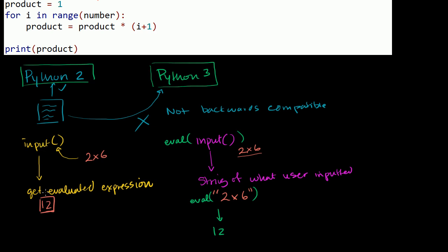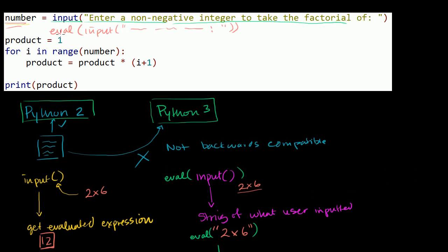So in Python 2, the input function kind of does it all for you. Python 3, it returns a string, and then you have to evaluate the string to get 12. So if you try to do this on Python 3 and it broke, that is the reason why. You've got to put an eval around it.